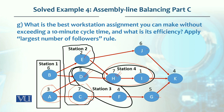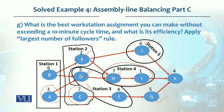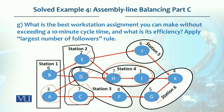Between J and G, both have the same number of followers, so we break the tie using the longest processing time — J is assigned to workstation 5. K cannot be added due to precedence relationship; K cannot operate until G is complete. So workstation 5 has only J at 6 minutes, and the last two tasks go into workstation 6.